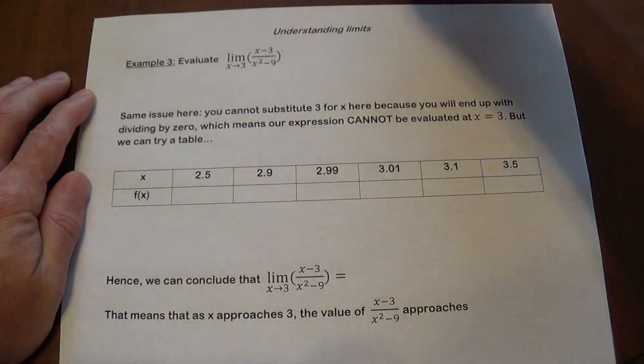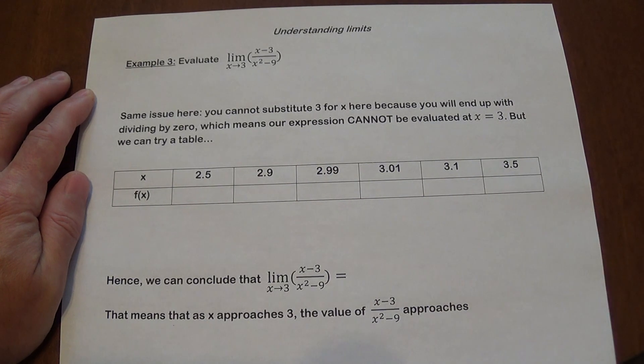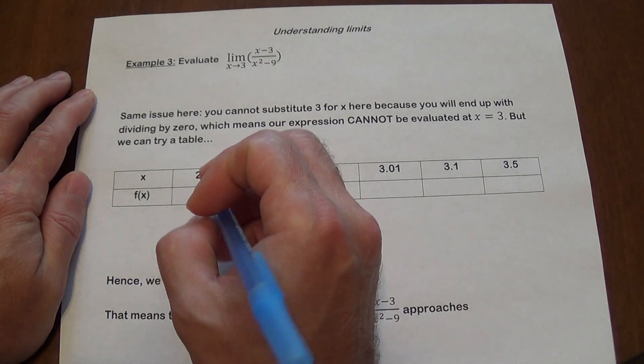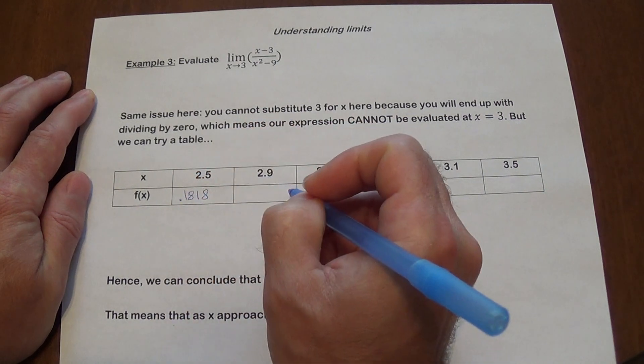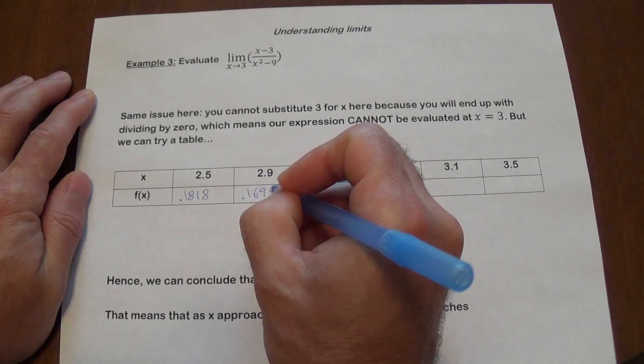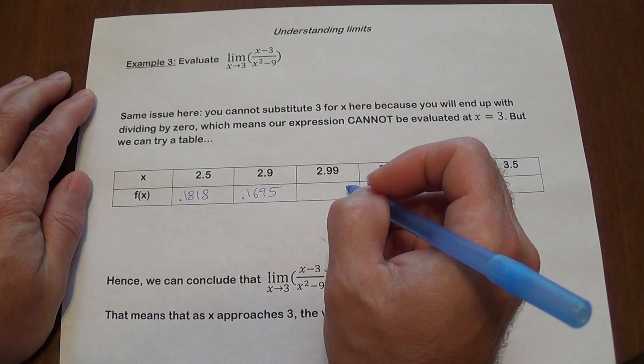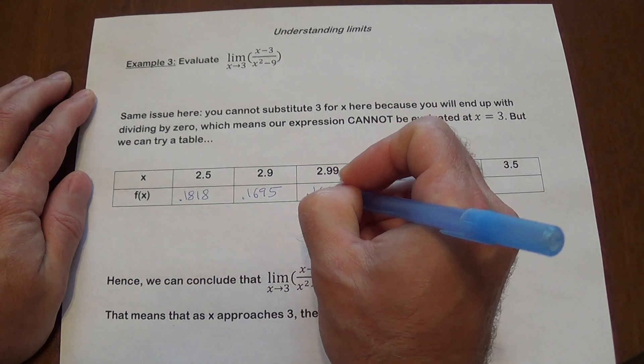If you're going to be using values here from the table, you are going to get decimals. Not very precise, so I'm just going to round all these decimals to 4 decimal places. So for 2.5, when you use that, it's going to give you 0.1818. Here we're going to get 0.1695. You can check all these values by entering this function in your calculator and evaluating that. 0.1669.